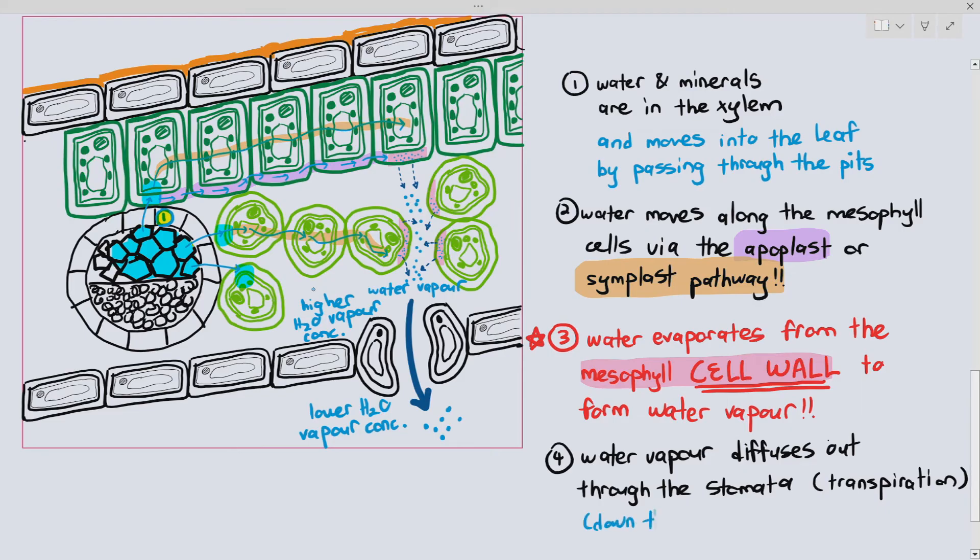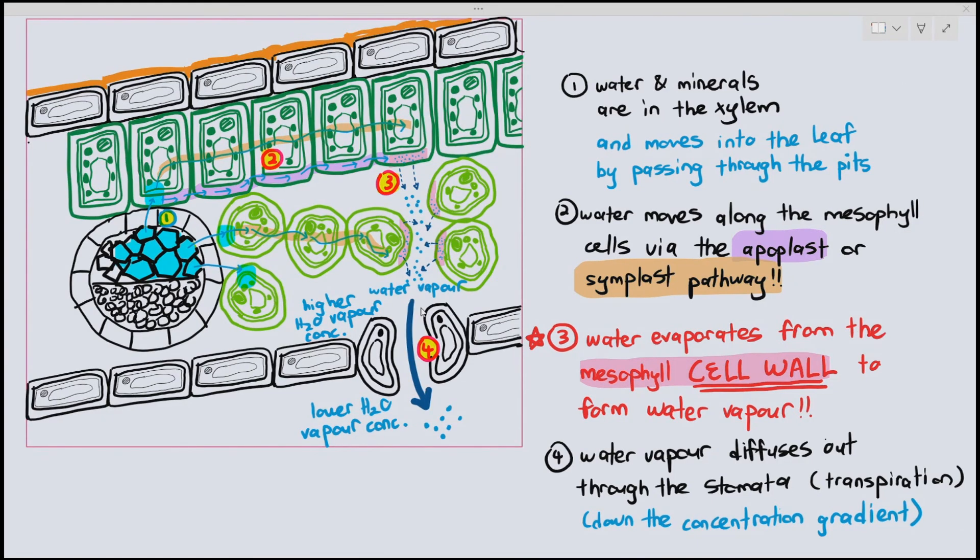Of course, then I'll ask my students, is transpiration a good or bad thing? Transpiration can be a bad thing because the plant is losing water. It's an unavoidable process. You might think that if the plant wants to avoid transpiration, all it has to do is just close the stoma.